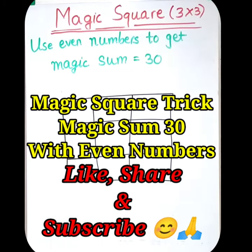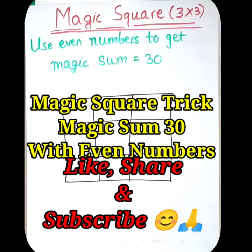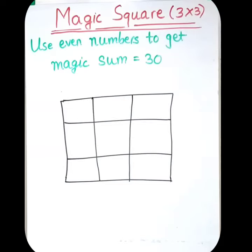Now let's see the magic square with magic sum 30, but here we are told use even numbers to get magic sum 30. So first, what is the first step? 30 divided by 3, we get it as 10.